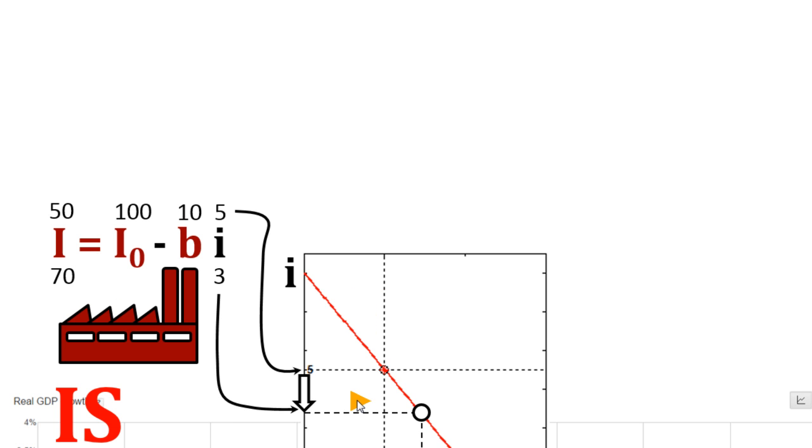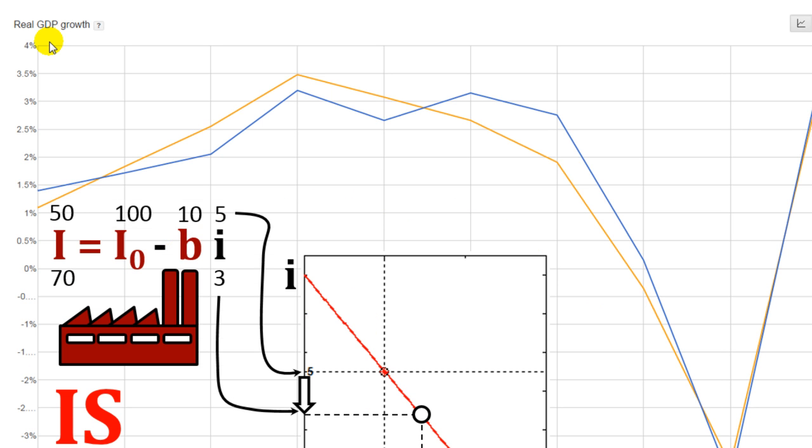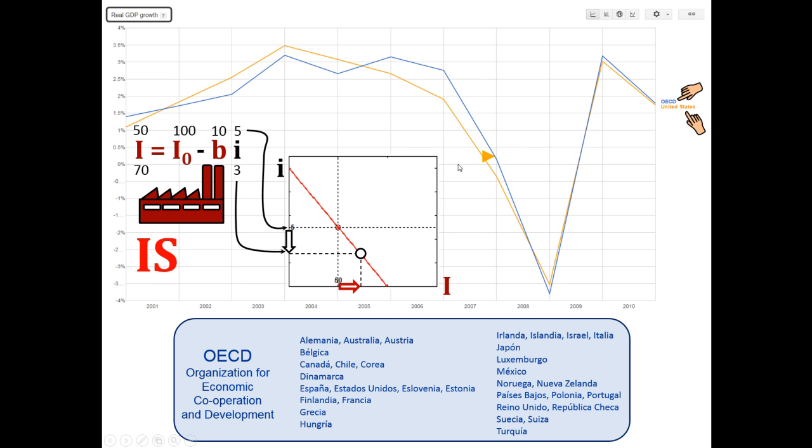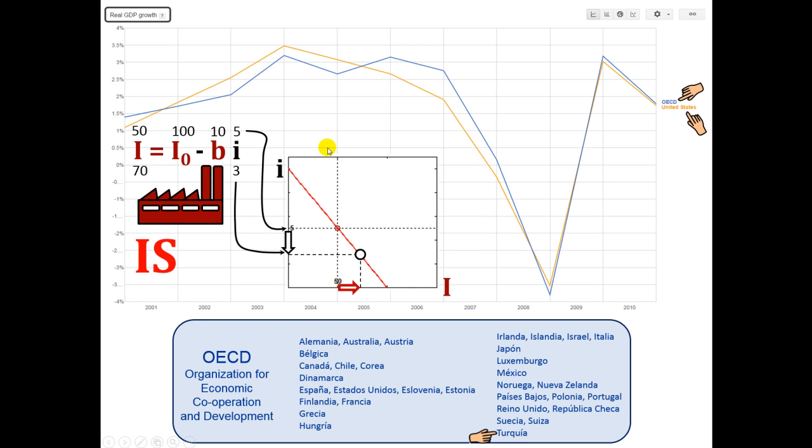If we see this graph that represents real GDP growth, this orange line is United States and this blue line is OECD, which stands for Organization for Economic Operation and Development representing many countries, so it's quite representative of what happened in the world.